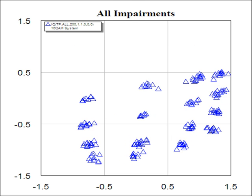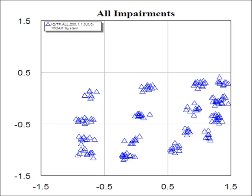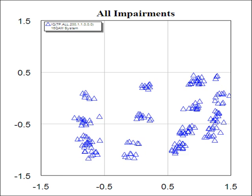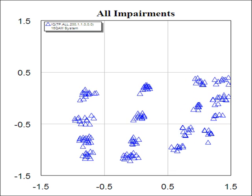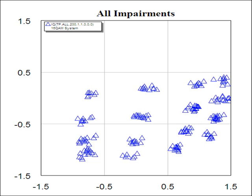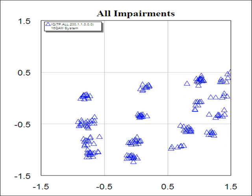If we turn on all impairments, it's hard to distinguish what is distorting the IQ plot. But clearly we can see there's a DC offset and some phase noise.